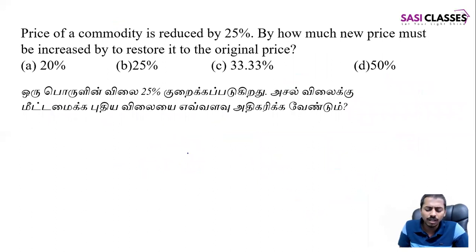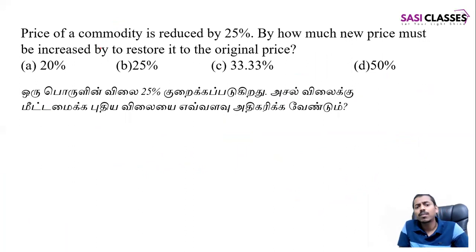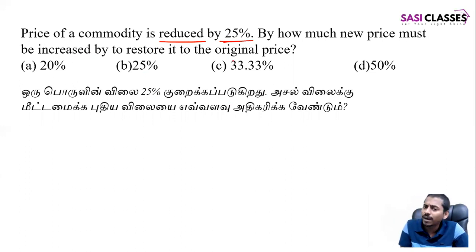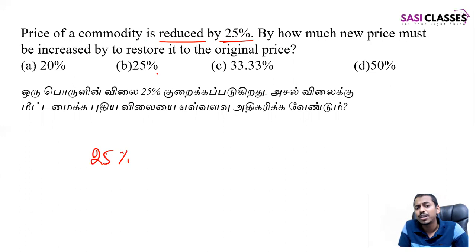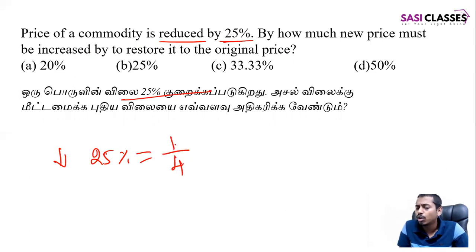If you want to solve the next problem: the price of a commodity is reduced by 25 percent. We can solve the problem with 25 percent shortcut. 25% equals 1 by 4. So in 4 units, one unit is less — minus one unit.